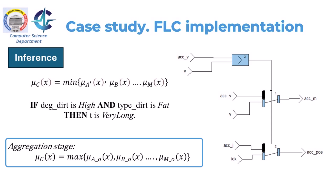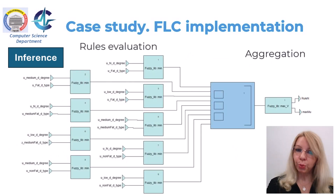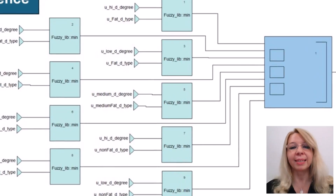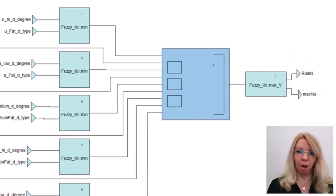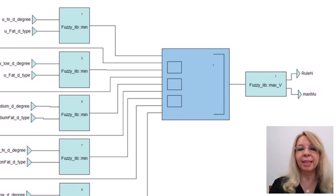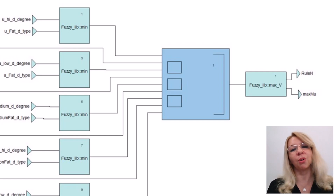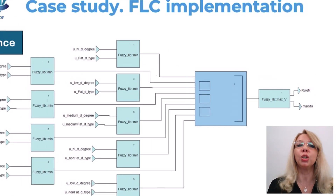The aggregation stage uses an equation to select the highest membership function value. Here, mu_C(x) is the membership function of the output fuzzy set used for defuzzification, while mu_A_O, mu_B_O, and mu_B_M_O are the membership functions defined for the output fuzzy set. After calculating all nine rules, the max operator offers two outputs: the maximum membership value (max_mu) and the corresponding rule number (rule_n).